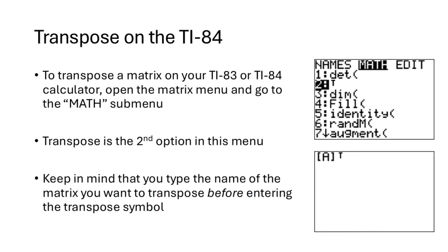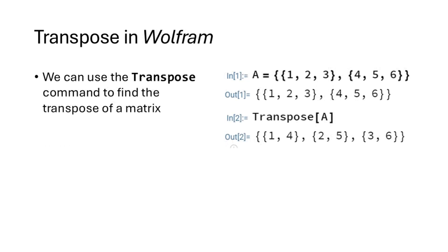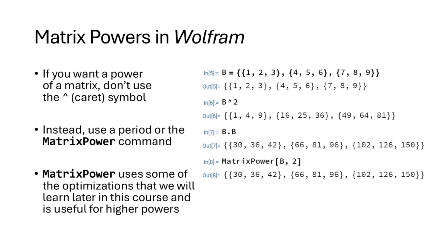To compute transpose using technology, on the TI-84 you find transpose under number 2 on the math submenu — it's the little T. You have to type your matrix from the names menu first, then go into the math menu and add the transpose symbol. In Wolfram, the command is simply the word Transpose — don't forget to use a capital T and square brackets.